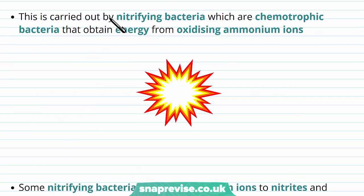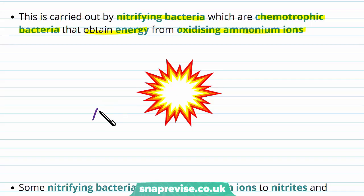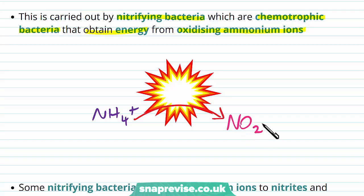This process is carried out by nitrifying bacteria — because this is called nitrification — which are chemotrophic bacteria. They obtain their energy from oxidizing ammonium ions. There are bacteria which take ammonium ions, NH4+, and turn these into nitrite ions, and in doing so they release energy.